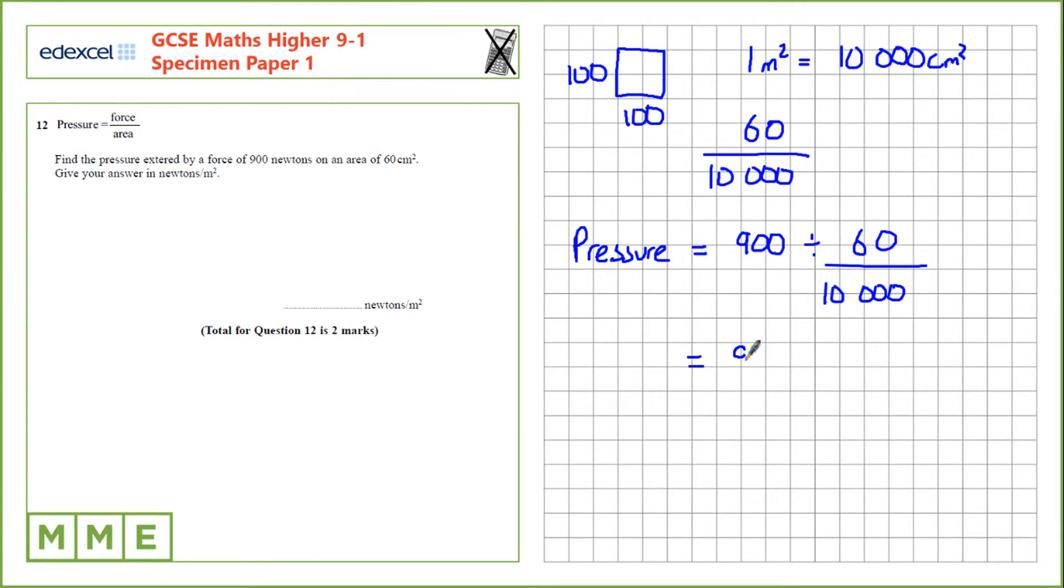If we divide by a fraction, it's the same as multiplying by the reciprocal. That's 10,000 over 60.